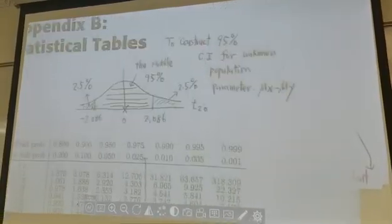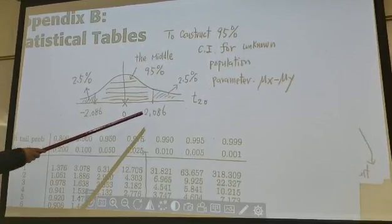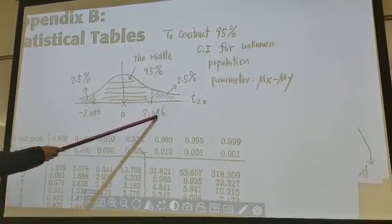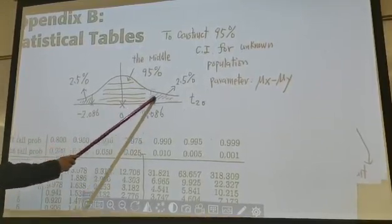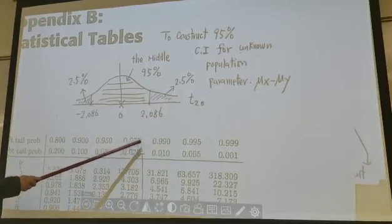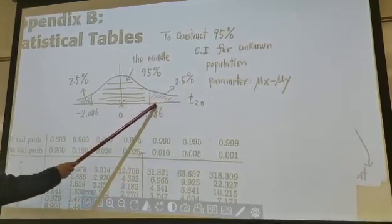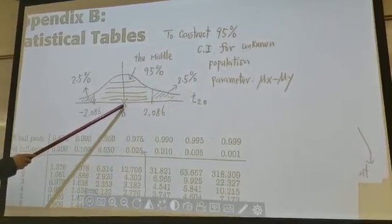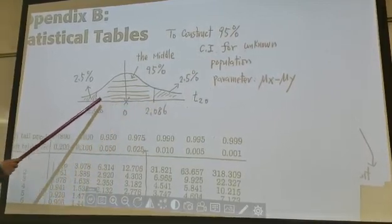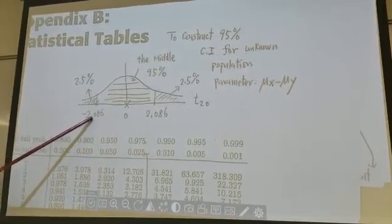Let's look at this picture. 2.086, the corresponding right tail, the upper tail is 2.086.